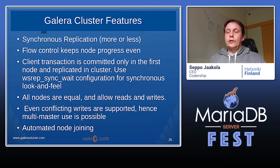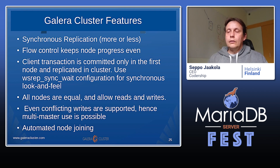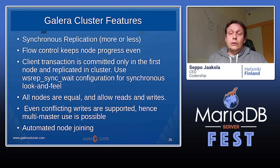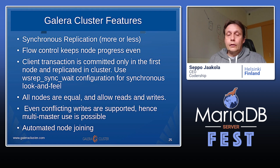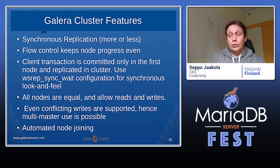Galera Cluster can also sort out conflicts. You can write to any of these nodes, any table, any row — there can be row-level conflicts — but Galera Cluster will pick a winner and loser for any conflict. The loser will roll back the transaction and receive a deadlock error. Galera Cluster can retry a failed transaction because of such conflicts, so the client doesn't even see the deadlock error. If the cluster retries successfully, the client will see that their transaction took twice as long as usual, but it was successful. This kind of automation is also possible for multi-master use cases.